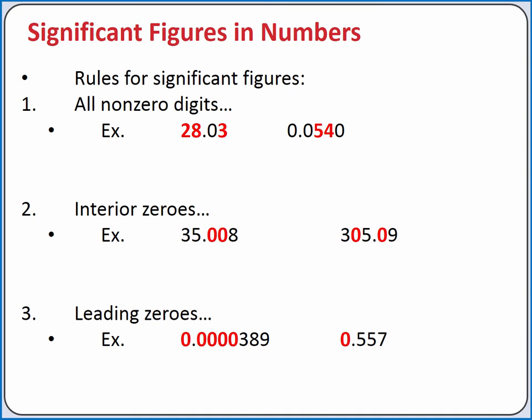To determine the number of significant figures in a measurement, we apply four rules for significant figures. The first rule is that all non-zero digits are significant.